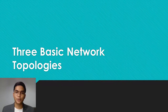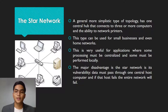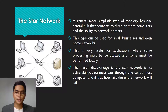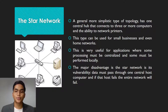Three basic network topologies. The first topology is the star network. The star network, a generally more simplistic type of topology, has one central hub that connects to three or more computers and other devices on the network. This type can be used for small businesses and even home networks. It is useful for applications where some processing must be centralized and some must be performed locally. The major disadvantage is that the star is vulnerable — data must pass through one central host computer, and if that host fails, the entire network will fail.